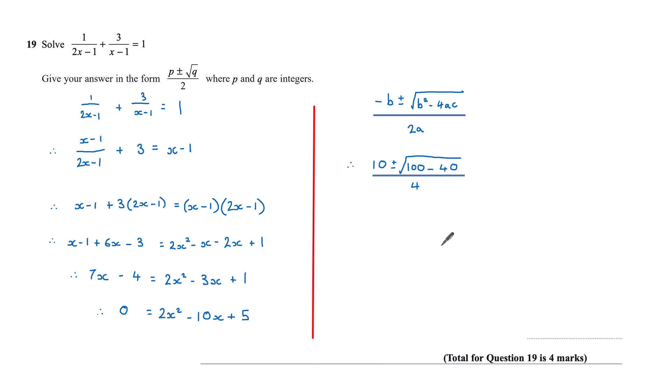Square root of 100 minus 40, that's the square root of 60. 60 can be written as 4 times 15, so that's the square root of 4 times 15, or root 4 times root 15, which is 2 root 15.